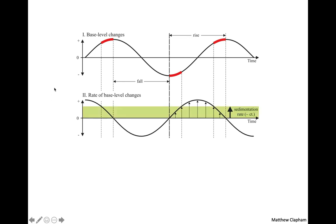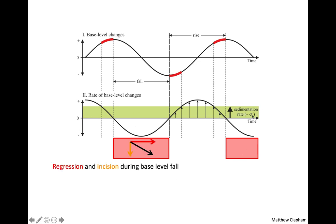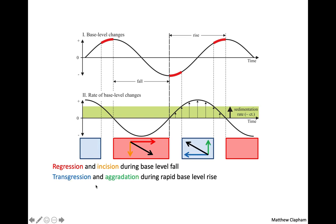What we see are times of positive and negative sedimentation rate. Positive sedimentation rate means aggradation through time; negative means incision. Typically where it's incising, we'll see erosive surfaces as well. Regression and incision happen during base level fall. During times of sea level rise, we see transgression and aggradation. The rates will change — there'll be times of higher and lower transgression and regression.